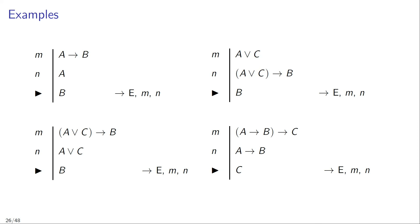Here are a couple of examples of correct applications of this rule. First example: suppose in line M we have the sentence if A then B, and in line N we have the sentence A — then you can infer B. Second example: if in line M you have the conditional if A or C then B, and in line N you have the antecedent A or C, then you can infer the consequent B.